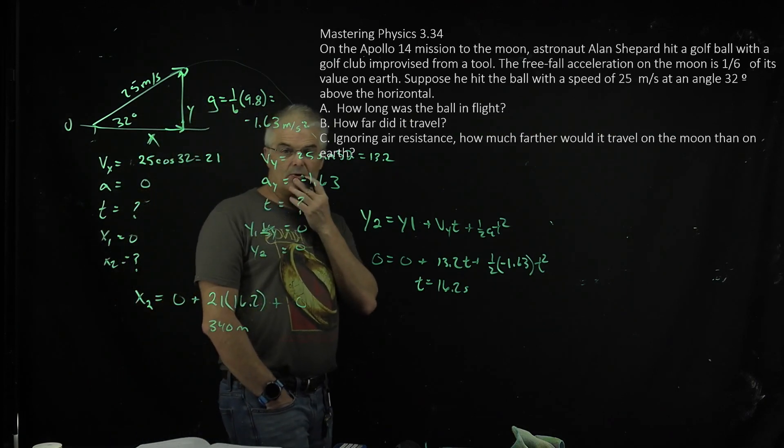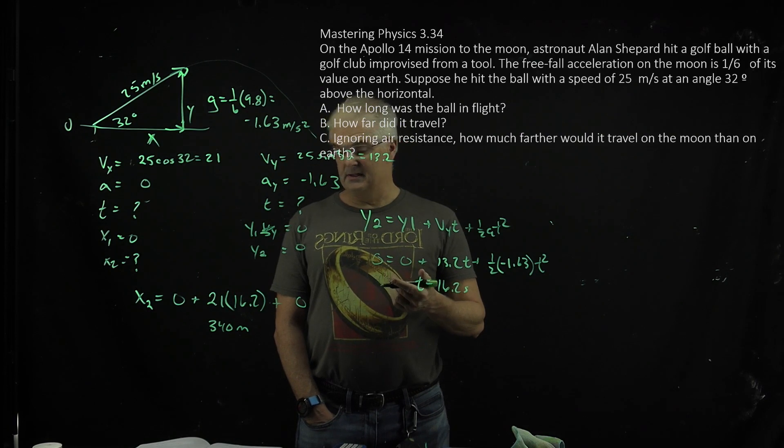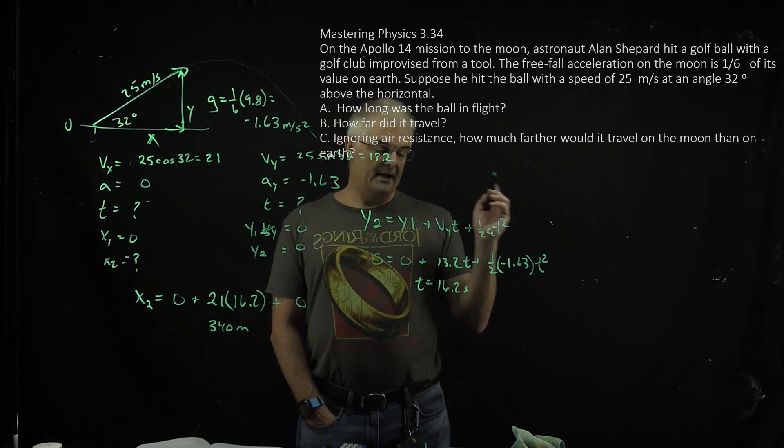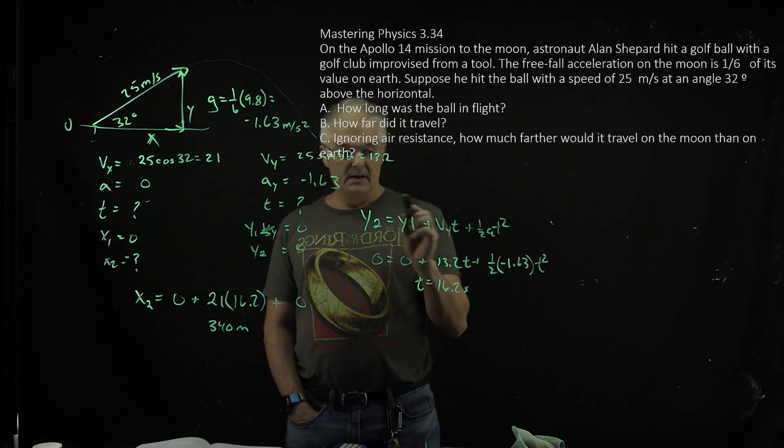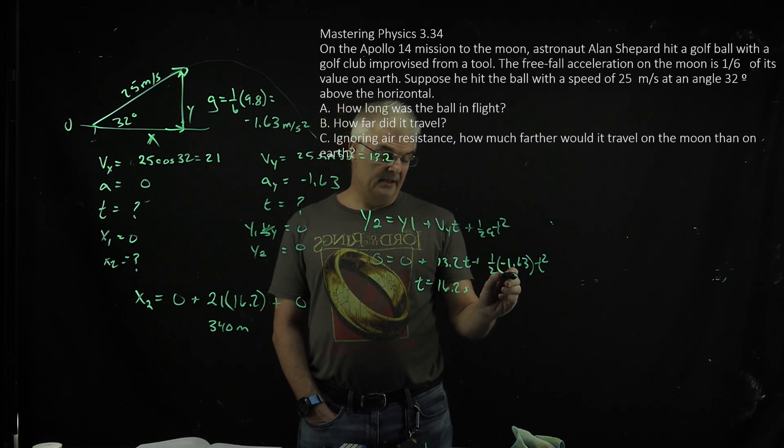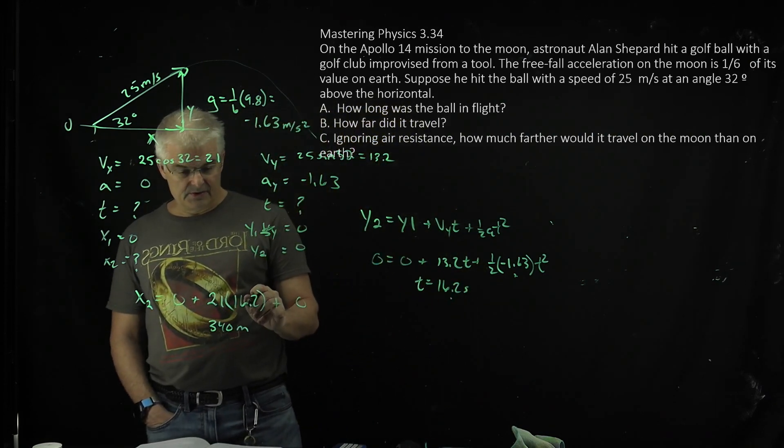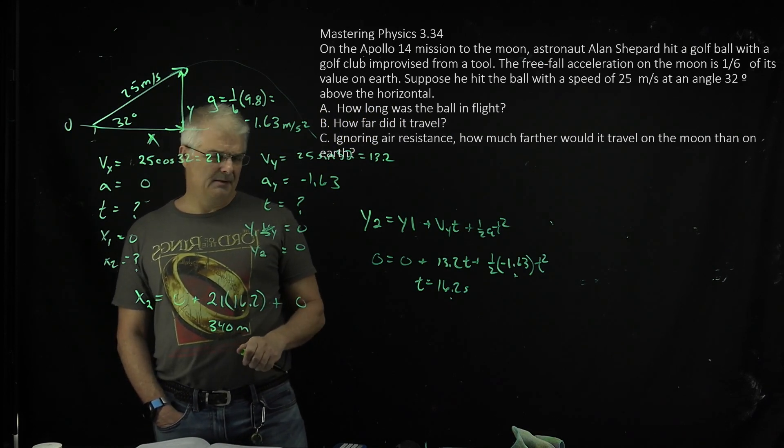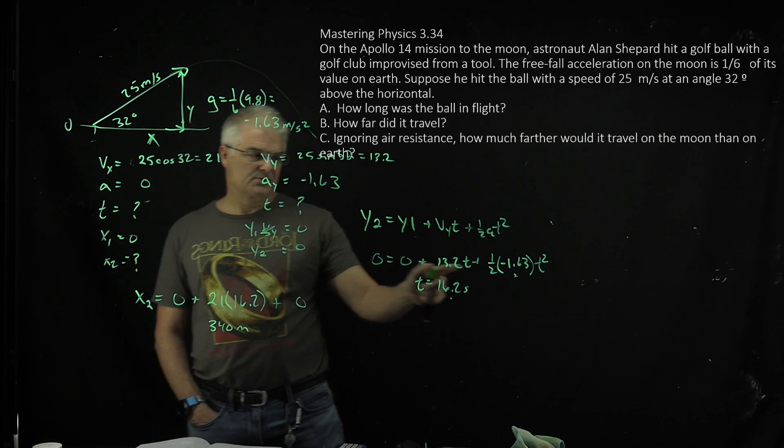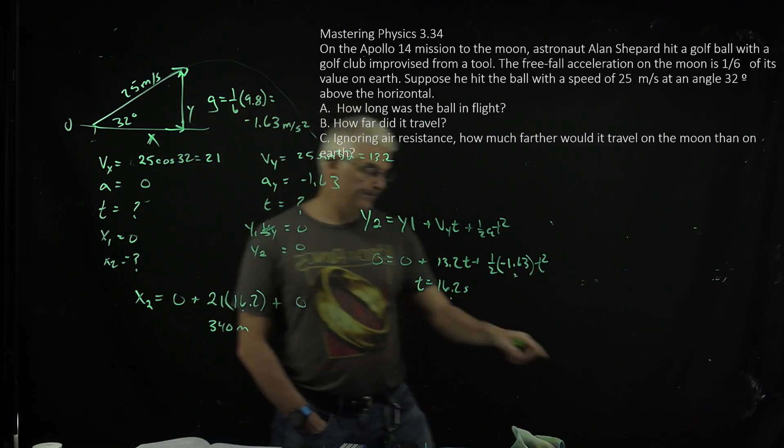So that is the answer to that. Ignoring air resistance, how much further would it travel on the moon than on the earth? So what you would have to do, I'm not going to solve that, is that you would, instead of putting, you put 9.8 here, or negative 9.8 and solve for the time, and then plug back in here your time into this equation, and then you could compare the differences and see. It may be a sixth, but I don't think so because there's a square thing going on. So you'll have to do the math to figure it out. Thank you.